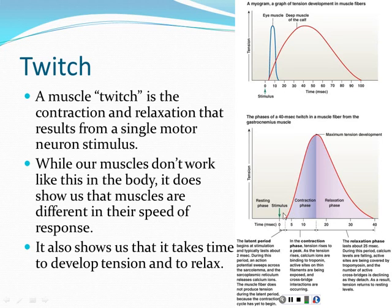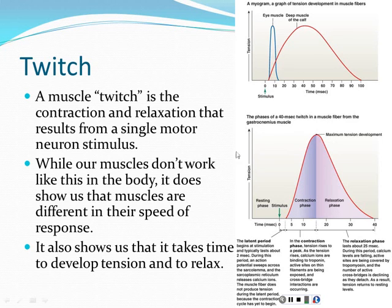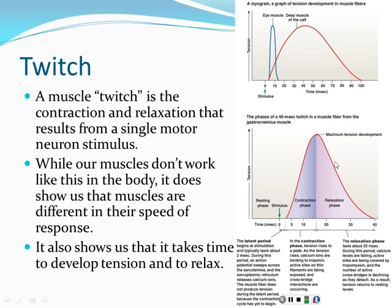As calcium is released from the sarcoplasmic reticulum, we would see an increase in tension as those myosin heads start pulling on actin molecules, pulling those sarcomeres together. But if there's no further stimulus, that calcium starts to get taken back up into the sarcoplasmic reticulum. Once the calcium level falls, the muscle starts to relax. In response to a single action potential, we have a contraction phase, then a relaxation phase, with active sites blocked by tropomyosin. This is called a twitch.